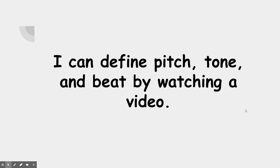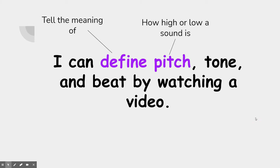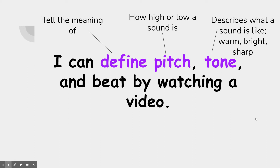Our learning target says I can define pitch, tone, and beat by watching a video. Define just means to tell the meaning of. Pitch is how high or low a sound is. Tone describes what a sound is like — is it warm, bright, or sharp? And beat is kind of like the rhythm of sound.